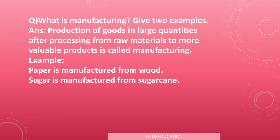At the end, the sugarcane is processed into sugar. So here, sugarcane is the raw material and sugar is the more valuable finished product — that process is called manufacturing. Another example: paper is manufactured from wood, and sugar is manufactured from sugarcane.